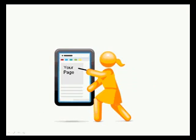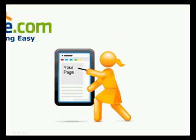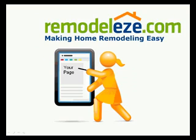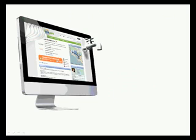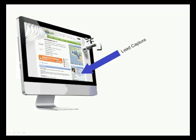It's done using a software program that automatically creates pages for you and puts them onto the internet. You can create as many pages as you want and it's completely free. It's called Remodelese.com, and here's how it works. Just like the lead generation companies, Remodelese.com puts thousands of pages onto the internet.